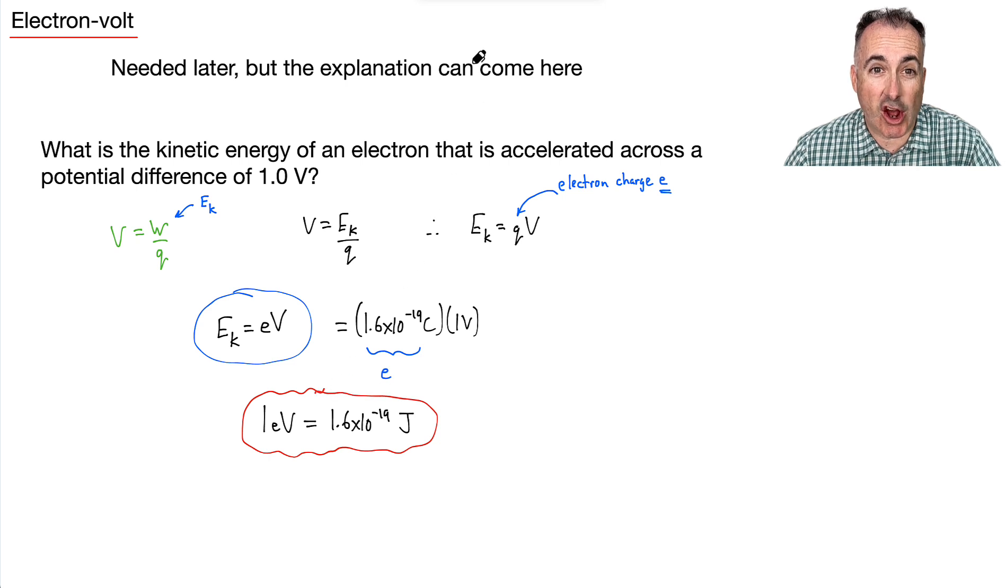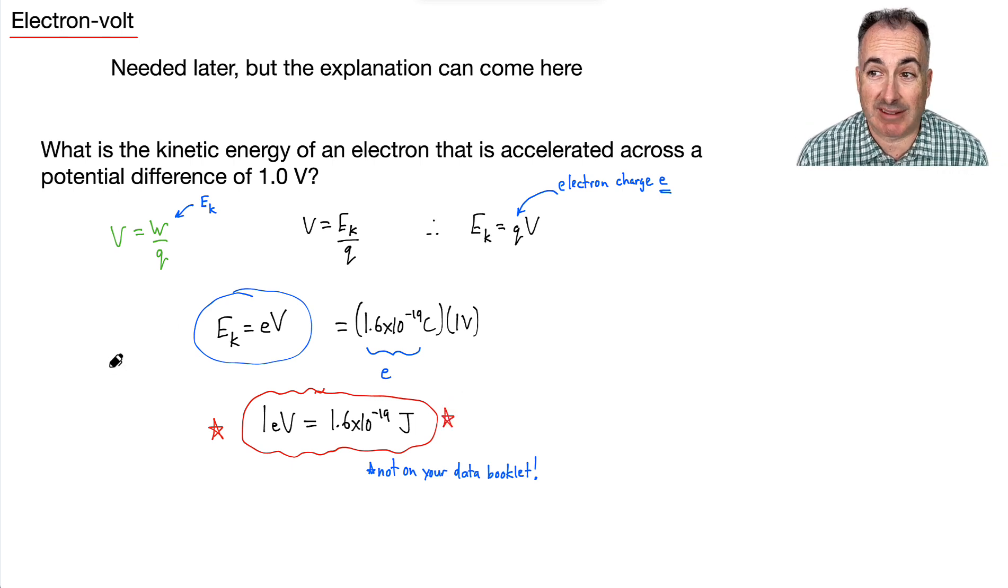This is the piece we're going to need. This is not on your data booklet. But it's going to be really important. So later on when we're working with energies in electron volts and you look in your data booklet, I can't find where the electron volt is. Nice, easy unit. If you take 1e times 1V, it turns out that just gives you this number, 1.6 times 10 to the minus 19, because that's what e is. It turns out when you multiply Coulombs of volts, you end up with joules. So 1 eV, one electron volt, is 1.6 times 10 to the minus 19 joules.